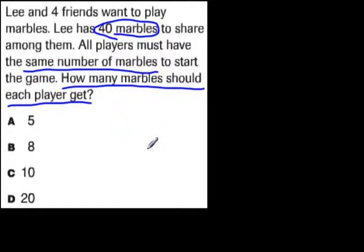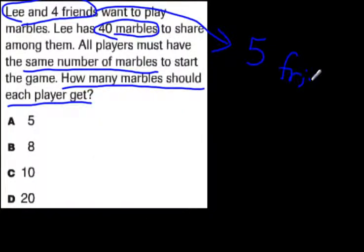If someone's rushing through this question and not thinking carefully, they might say, oh, 40 marbles divided by 4 friends, and there I can do it. But careful. Look at the first sentence. Lee and 4 friends want to play. Lee is not just giving these marbles away so his friends can play with them. Lee wants to play too. Lee and 4 friends is a hidden number. That is really 5 friends.